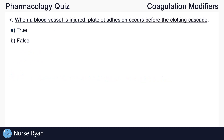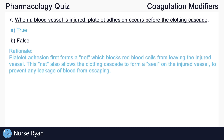Question number seven: When a blood vessel is injured, platelet adhesion occurs before the clotting cascade. This is A, true. Platelet adhesion first forms a kind of net which blocks red blood cells from leaving the injured vessel. This net also allows the clotting cascade to form a seal on the injured vessel to prevent any leakage of blood from escaping.